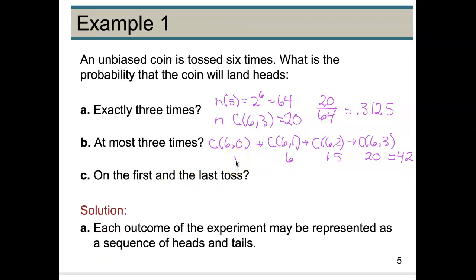So the way to get no heads is one way. The ways I can choose one head are six. The way I can get two heads are 15, and the way I can get three heads is 20. We saw that above. And so if I sum these up, I get 42. So the probability of at most three is going to be 42 over 64, and that is 0.6563.